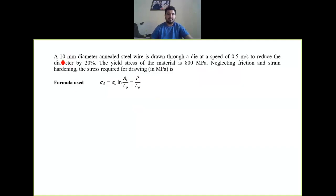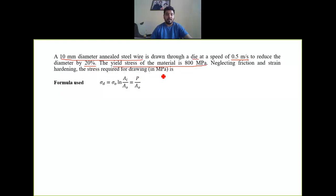Next numerical: a 10 mm diameter annealed steel wire is drawn through a die at a speed of 0.5 m/s to reduce the diameter by 20 percent. The yield stress of the material is 800 MPa, which we can also call the flow stress. Neglecting friction and redundant work, calculate the drawing stress. The drawing stress σ_d = σ₀ × ln(Ai/Ao), where σ₀ = 800 MPa.